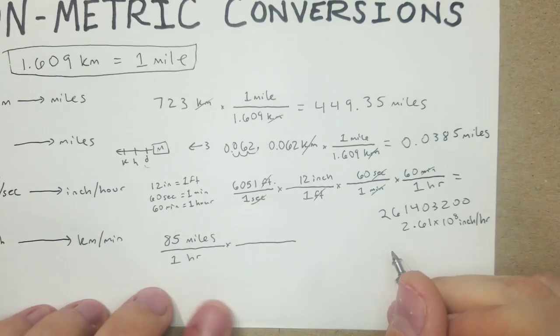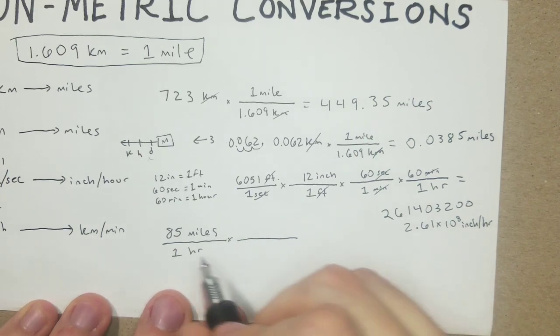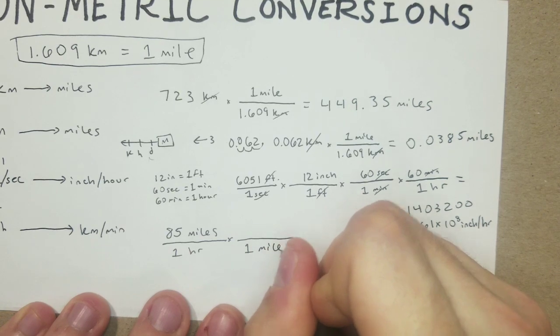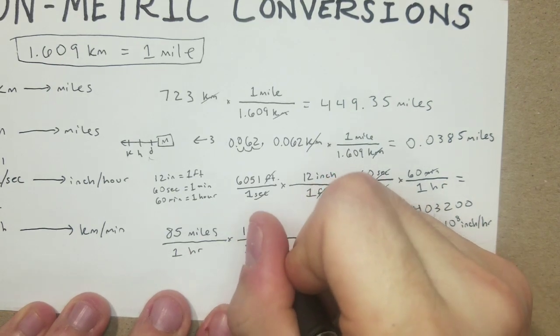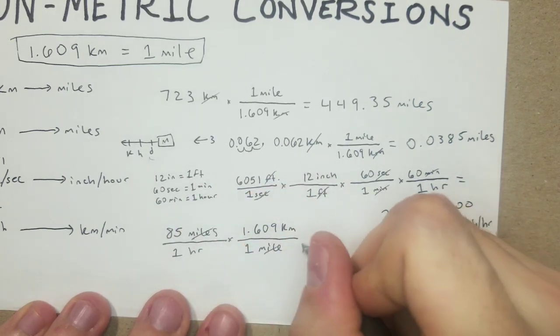And I like to get rid of what's on top first, like I said. So we have the 85 miles per hour, and we know one mile contains 1.609 kilometers. So now we've canceled out miles. We're working in kilometers.